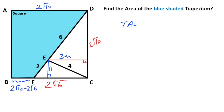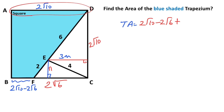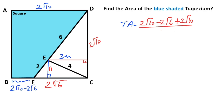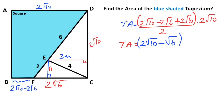Now we can calculate the trapezium area easily: it is one half times (base 1 plus base 2) times height. Base 1 plus base 2 is (2 root 10 minus root 6) and height is 2 root 10. Therefore the trapezium area equals 2 root 10 minus root 6, in parentheses, times 2 root 10. So the area equals 40 minus 2 root 15 square units.